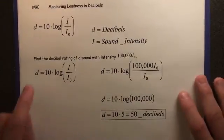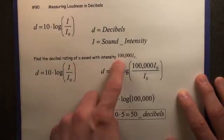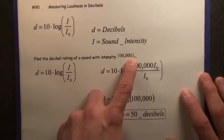The first example we're going to be given here is find the decibel rating of a sound with intensity 100,000 times I sub zero.